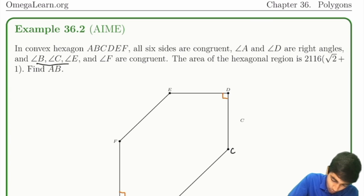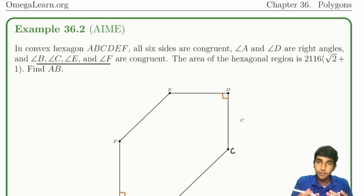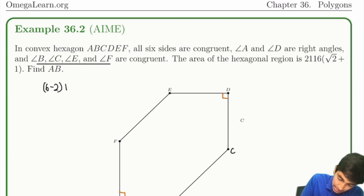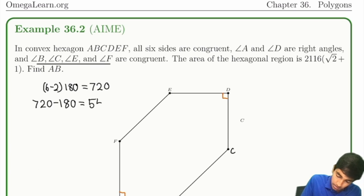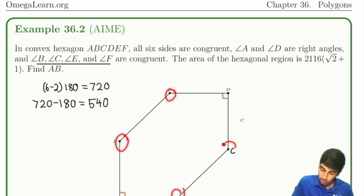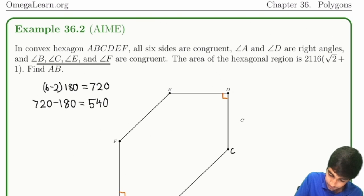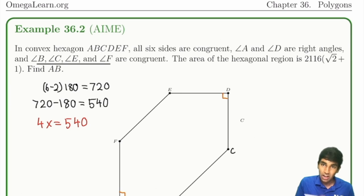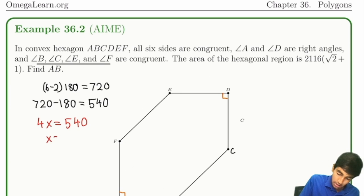First, we're given that four angles are all congruent. What is the measure of each? The total sum of angles in a hexagon is (6-2) × 180 = 720 degrees. We know two angles are 90 degrees, so we subtract those to get 540. Since all four remaining angles are equal, we write 4x = 540. Solving: 540 ÷ 4 = 135. Each of these angles has a measure of 135 degrees.